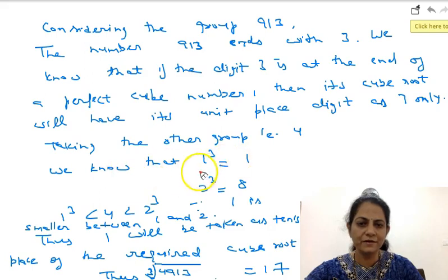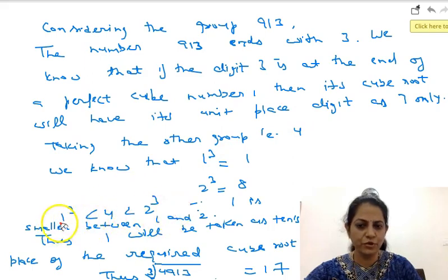Now we know that cube of 1 is 1, cube of 2 is 8, and this 4 is coming between these two cubes. 1 cube and 2 cube. So it means 1 is smaller between 1 and 2.